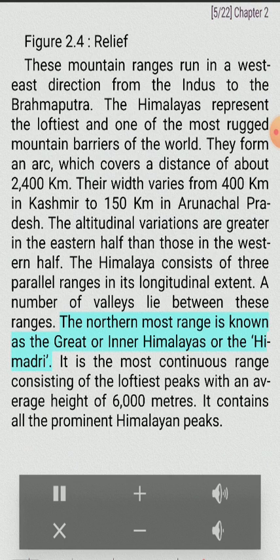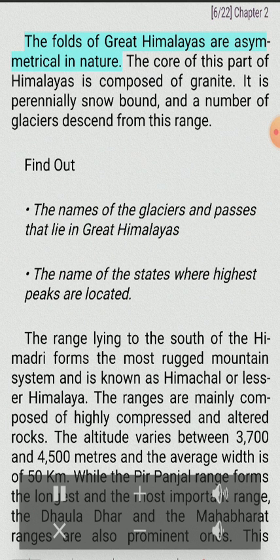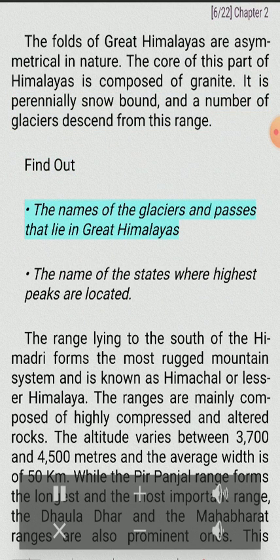The northernmost range, known as the Great or Inner Himalayas, is the Himadri. It is the most continuous range consisting of the loftiest peaks with an average height of 6,000 meters and contains all the prominent Himalayan peaks. The folds of the Great Himalayas are asymmetrical in nature, and the core of this part is composed of granite. It is perennially snowbound, and a number of glaciers descend from this range.